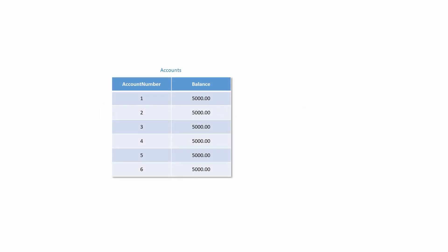A classic example of a database transaction is the process of transferring money from one bank account to another. Here you can see a database table called Accounts. It has two columns: Account Number and Balance. Of course, this is very much a simplification. In reality, the database used by even a small banking operation would be much more complex than this. Nevertheless, the principles of a database transaction can be demonstrated here.